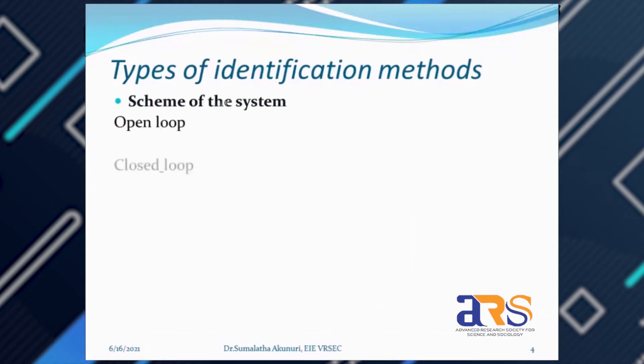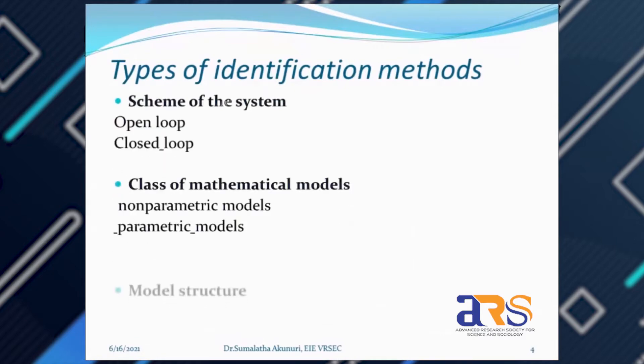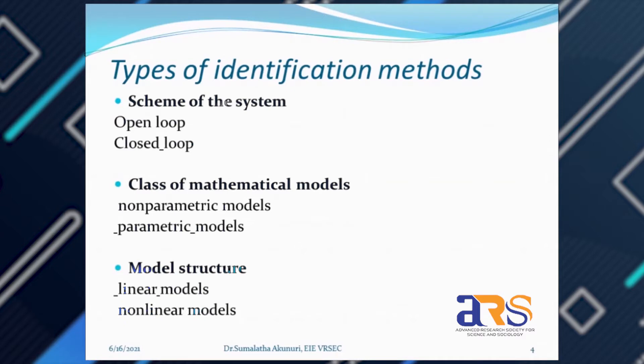There are different types of models we can obtain using system identification techniques. Based on the scheme used to collect data, identification can be open-loop or closed-loop. Based on the mathematical models, we can classify them as non-parametric and parametric — parametric models give more detail. Based on the nature of the process, we can also obtain linear and non-linear models.